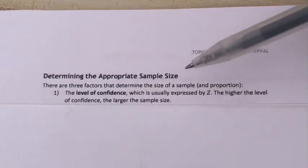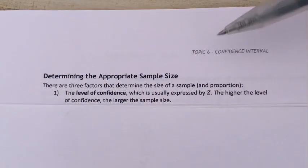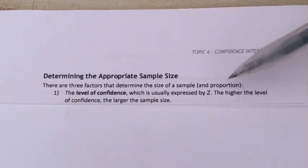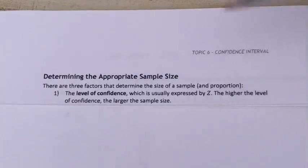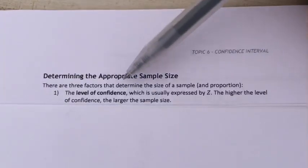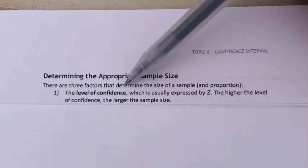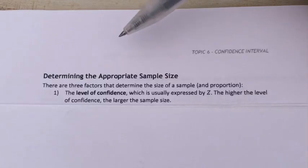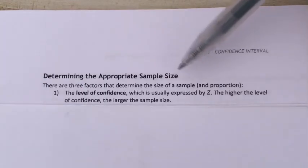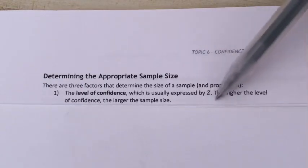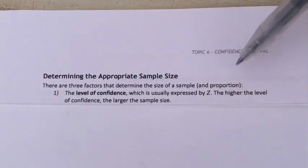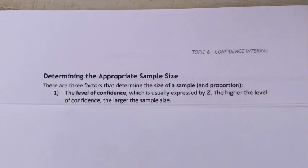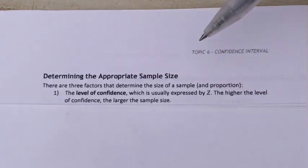The first factor to determine the size of a sample or a proportion is the level of confidence. We know that the level of confidence or confidence level is usually expressed by Z. The higher the level of confidence that we want to achieve, the larger must be our sample size.